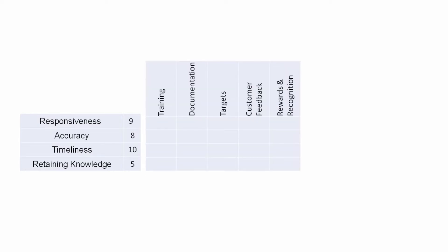The next step is identifying how we are going to fulfill those demands — the 'hows.' These include: training the people, documenting the process, defining targets for input and output metrics, defining a mechanism to capture customer feedback and a process to act on that feedback, and a reward and recognition system for employees. These are the 5 main CTQs we have decided for this example.